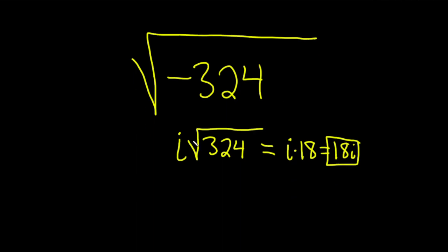A better way to do this is to just look at it and say, okay, there's a negative in the square root. There's going to be an i, and the square root of 324 is 18. So therefore, the answer is 18i.